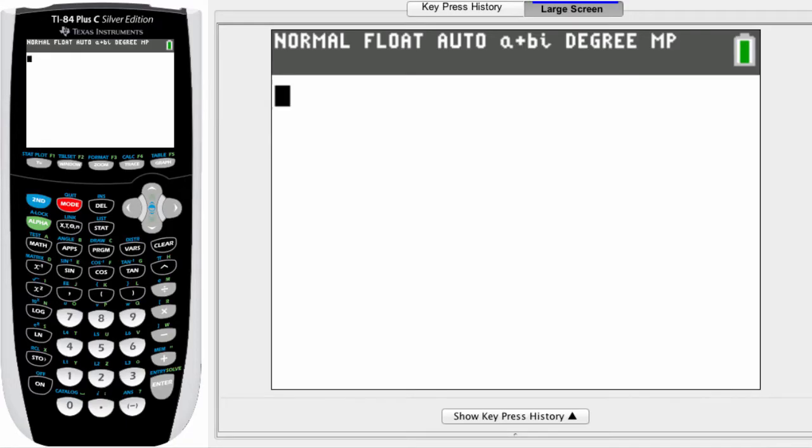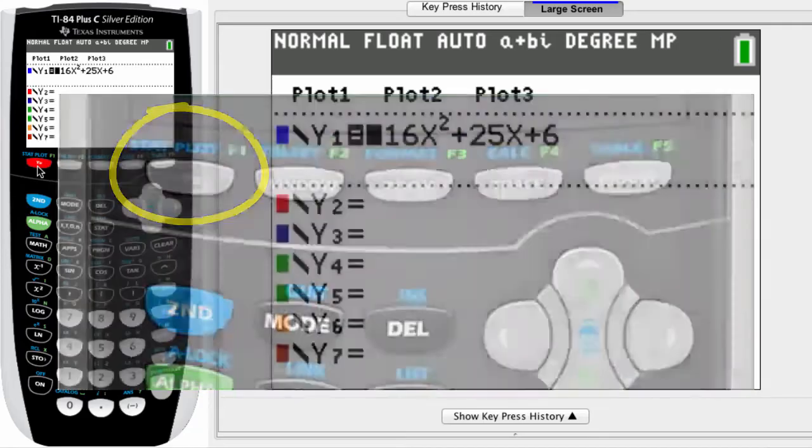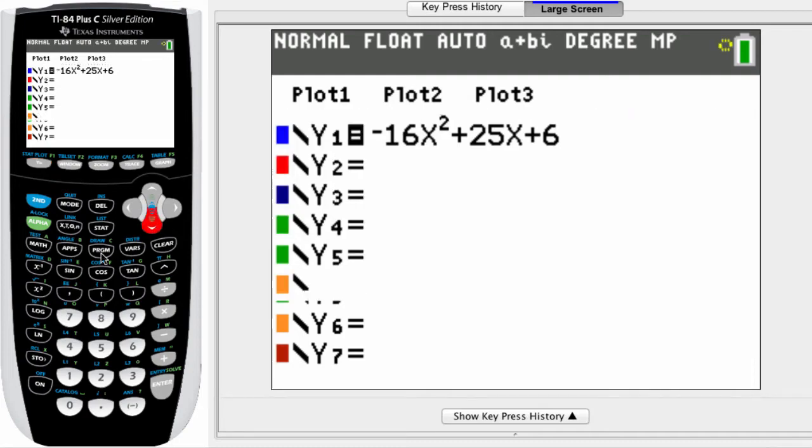Turn on your calculator and we're gonna put in a function. Press the y equals key and in the first available slot there, y1, you can put in this equation for an example. It's negative 16x squared plus 25x plus 6. Note the negative sign. This is different than the subtract key. Once you've got the equation in, press the keys zoom and 6.